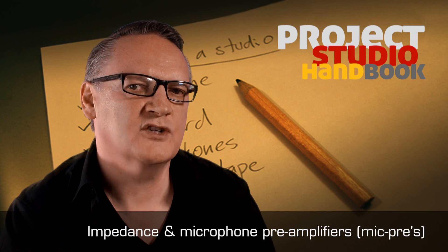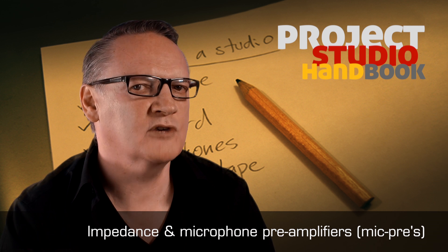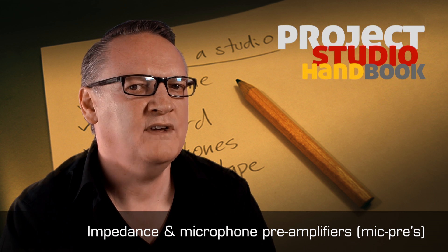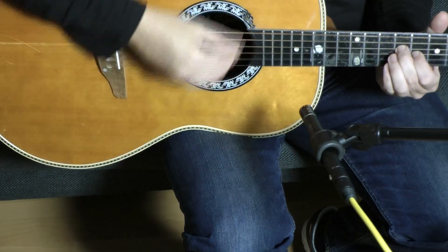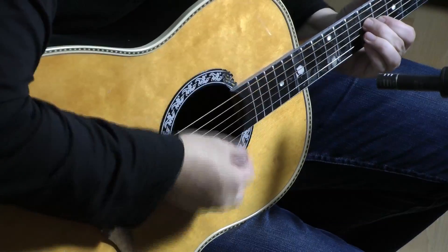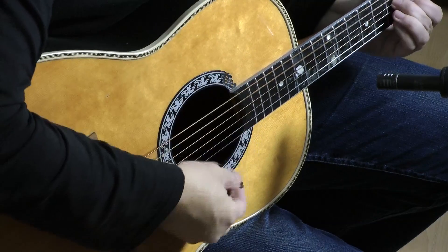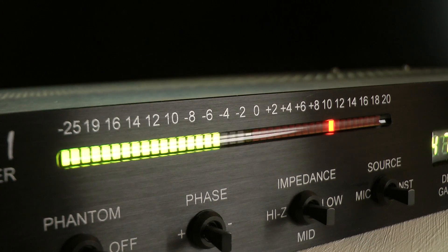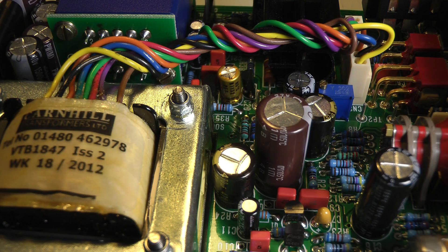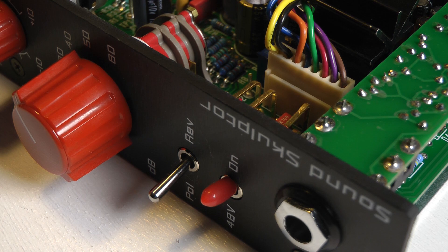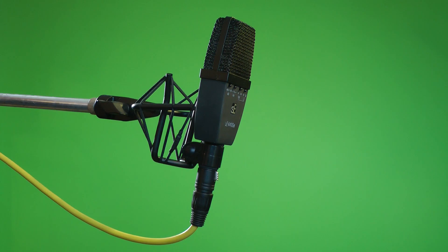The impedance interaction between a microphone and microphone pre-amplifier can have an impact on the performance of a mic. This interaction is most clearly heard in changes of level and frequency response. Should the mic and mic pre-amp impedances match, there will be a severe loss of level, and so pre-amps are designed with an impedance typically 10 times greater than that of mics.